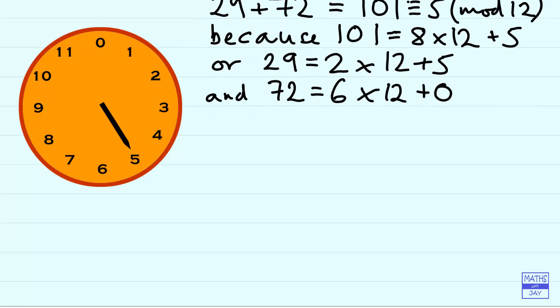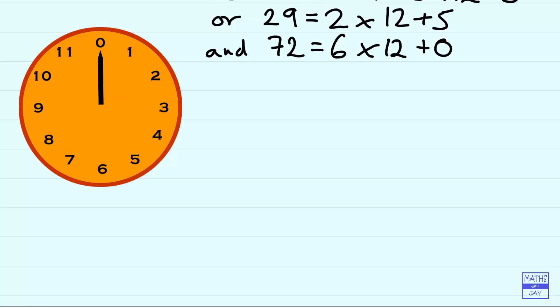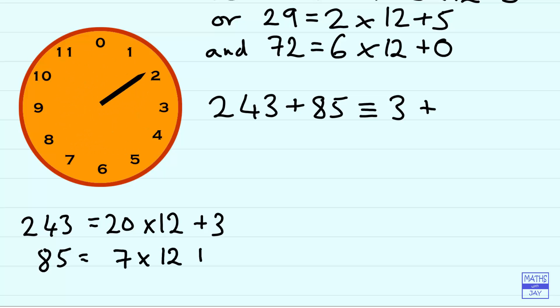The same sort of thing will work for much bigger numbers. So if we wanted to add 243 and 85 together, we can see that 243 divided by 12 is going to have a remainder of 3 because 240 is a multiple of 12. And 85, well we know that 84 is 7 times 12, so the remainder there is 1. So 243 plus 85 is going to be congruent to 3 plus 1 or just 4 mod 12.